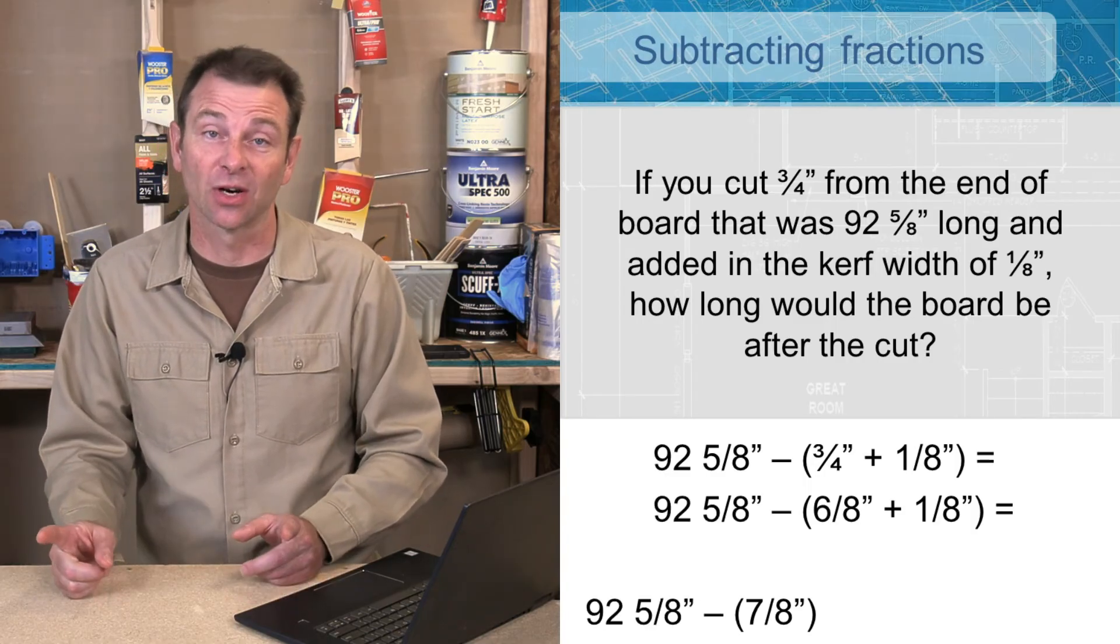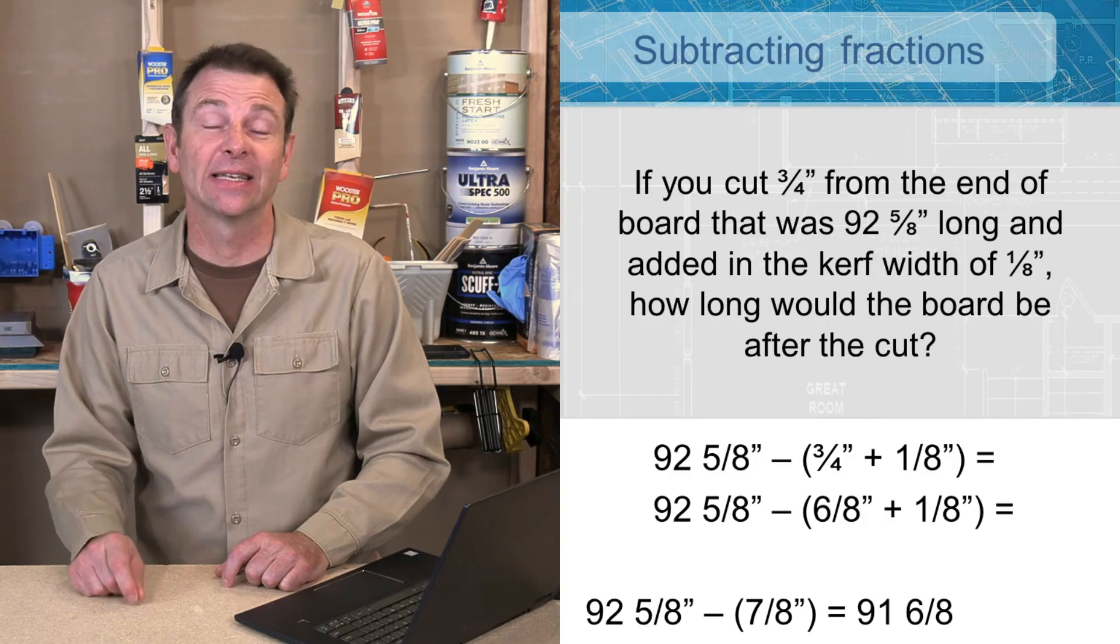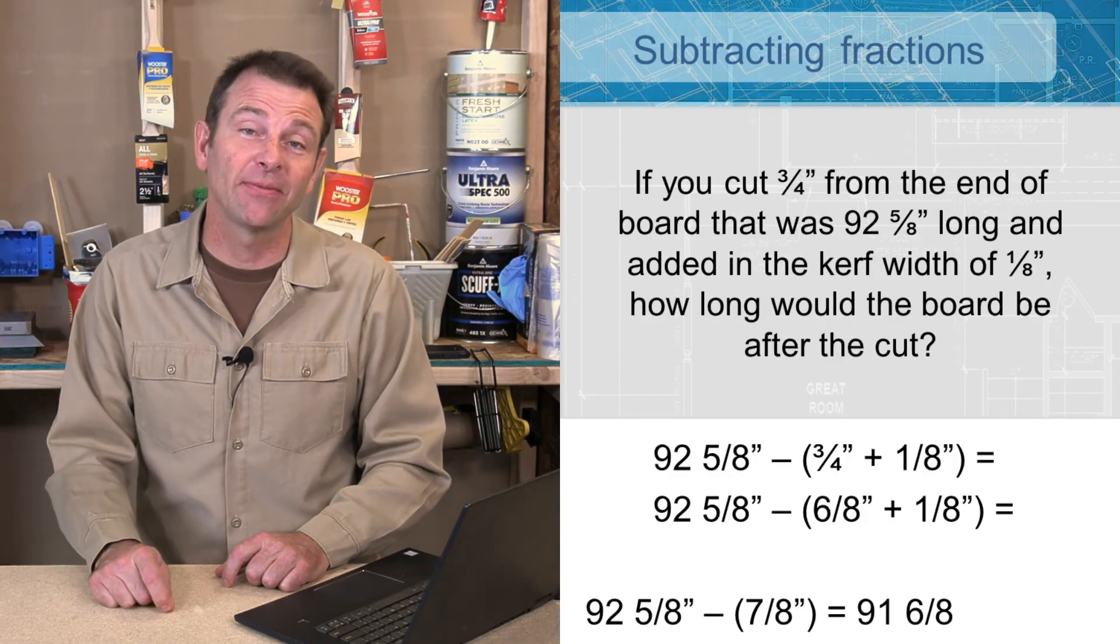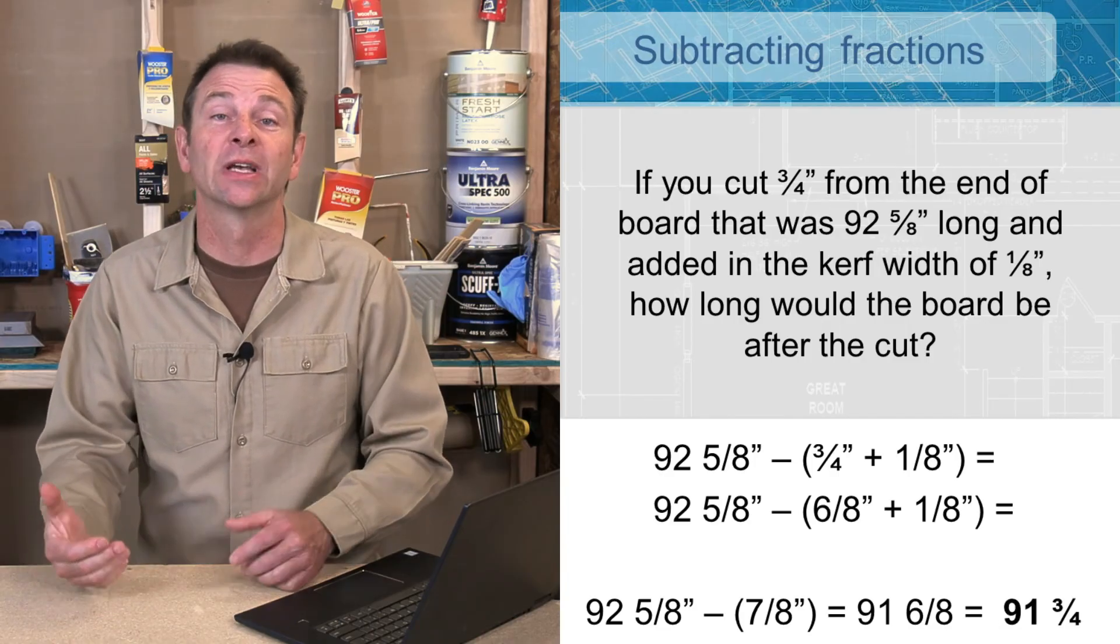Which is our original board length, and we're going to end up with 91 and 6/8. We can simplify 6/8 to a more common fraction, which would be 91 and 3/4, and that is our answer.